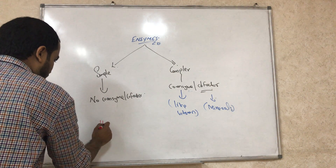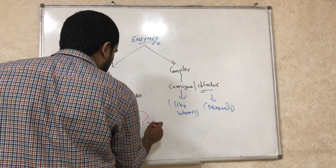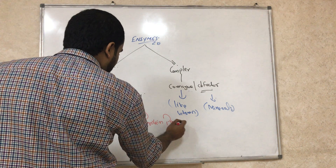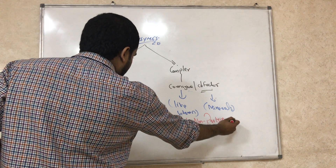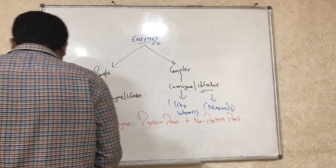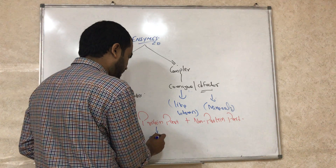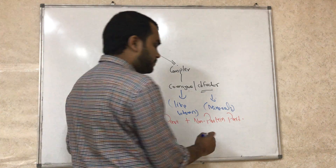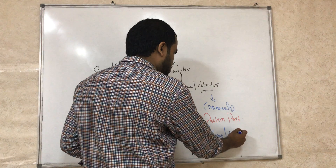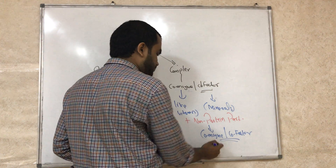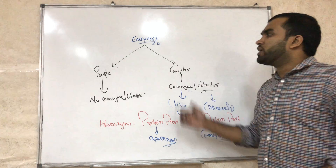There is something called a holoenzyme. A holoenzyme means the enzyme has both a protein part and a non-protein part. The protein part of a holoenzyme is called the apoenzyme, and the non-protein part can be a coenzyme or cofactor.